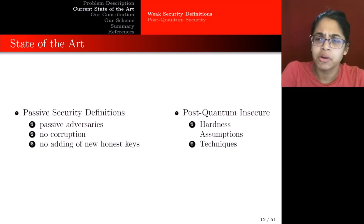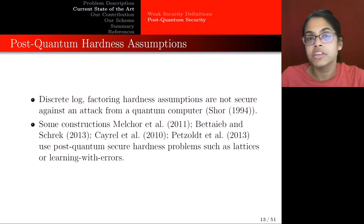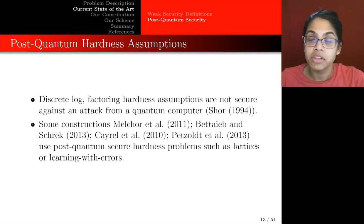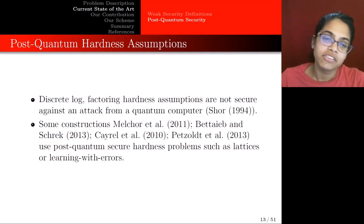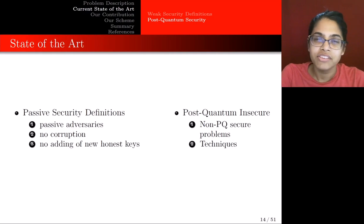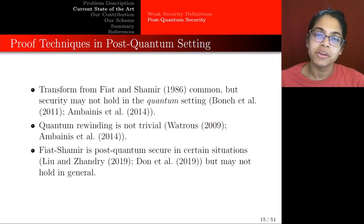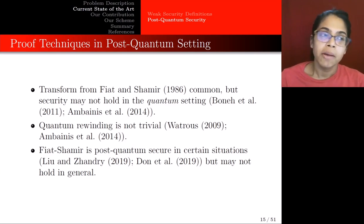The next problem is post-quantum insecurity. The first issue is hardness assumptions. Problems like discrete log and factoring are not secure against an attack from a quantum adversary, so any Threshold Ring Signature schemes that rely on these kinds of problems will not be post-quantum secure. There are schemes which use post-quantum secure problems such as lattices or Learning with Errors, but they might have another problem — the proof techniques. In a signature scheme it's very common to use the Fiat-Shamir transformation, but the security of Fiat-Shamir might not hold in the quantum setting because quantum rewinding is not trivial. There are some situations in which Fiat-Shamir is post-quantum secure, but this might not hold in general.